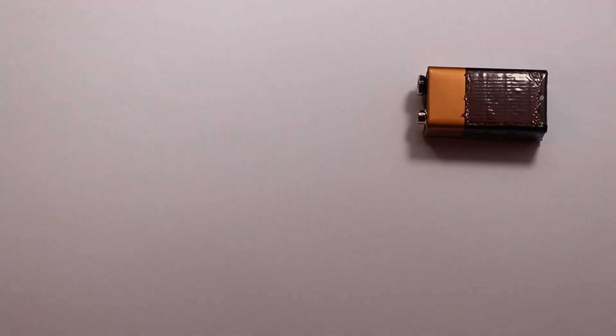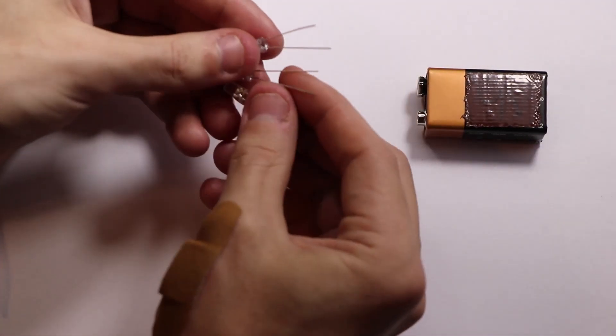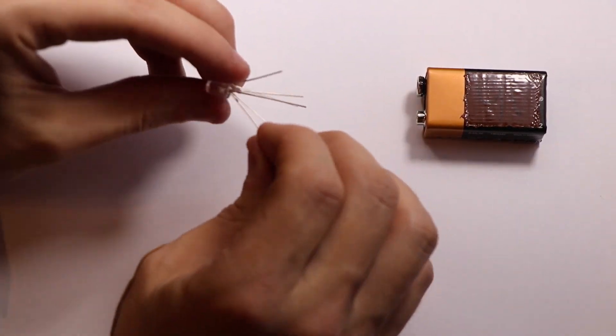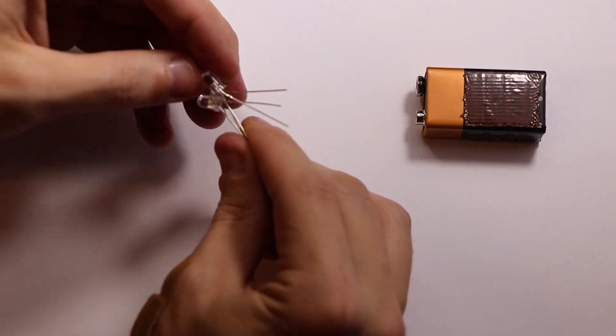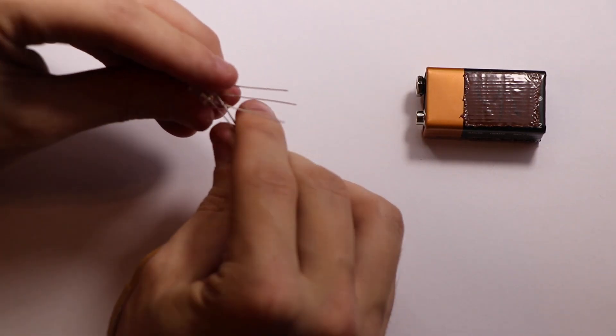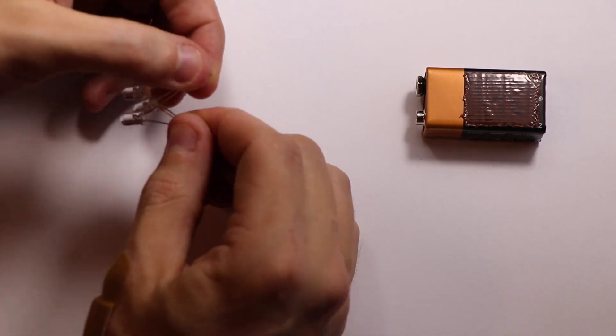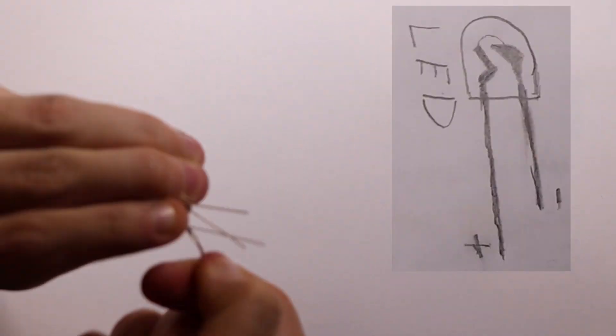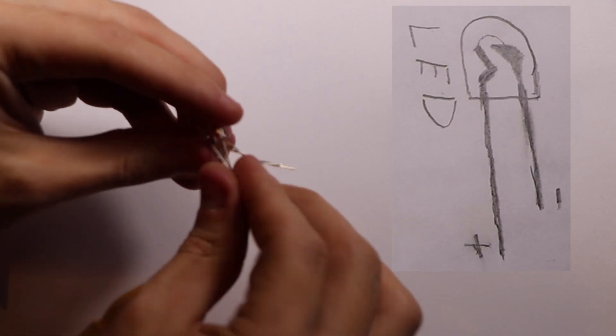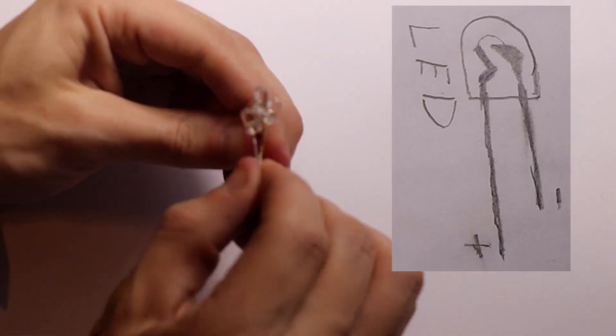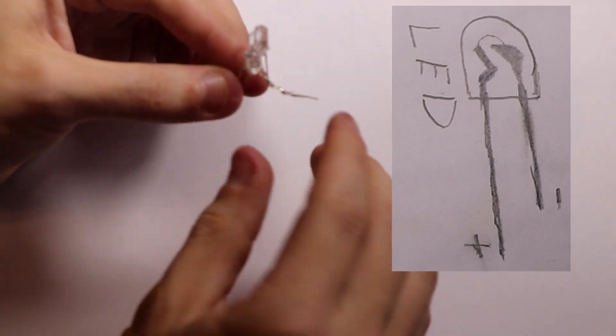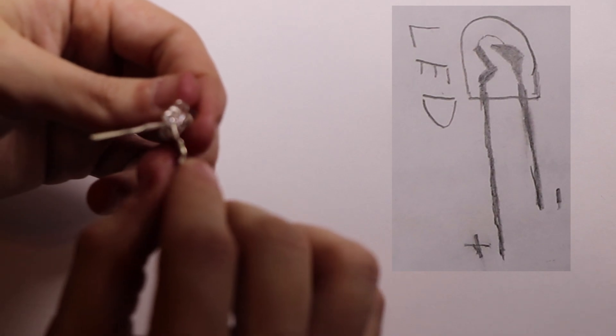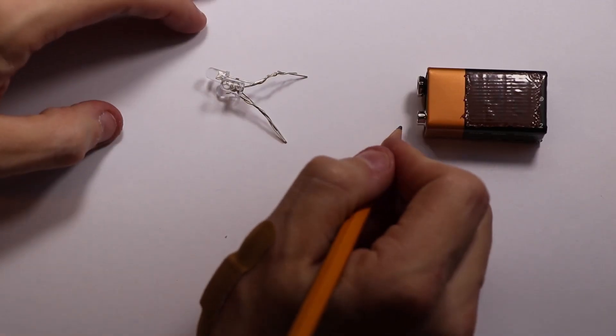Now I'll wind three LEDs into a parallel connection. I'll wind the positives together on one side and the negatives together on the other side. To find the positive wires, they're the longer ones and the negative is the shorter ones. What's most important is that the negative and positive do not touch—they cannot contact at any point.